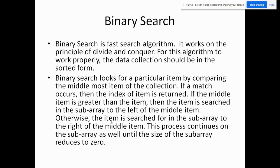Binary search is a fast search algorithm that works on the principle of divide and conquer. For this algorithm to work properly, the data collection should be in sorted form. Binary search looks for a particular item by comparing the middlemost item of the collection. If a match occurs, the index of the item is returned. If the middle item is greater than the item, the item is searched in the subarray to the left; otherwise, it is searched to the right. This process continues on the subarray until the size reduces to zero.